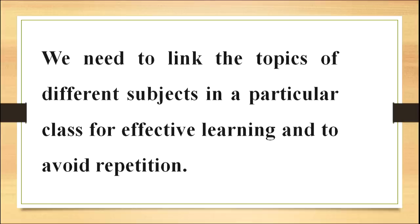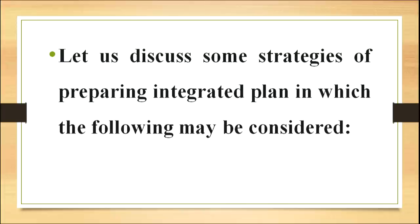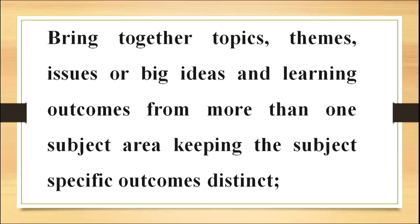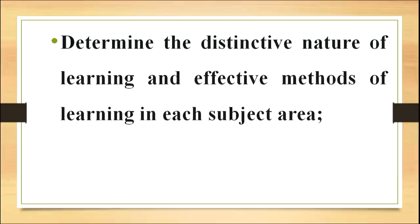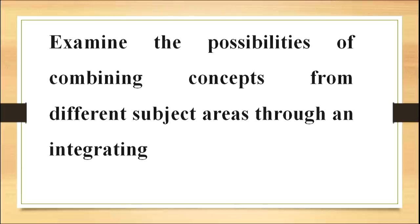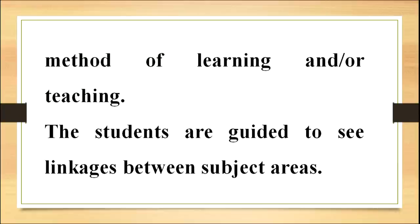We need to link the topics of different subjects in a particular class for effective learning and to avoid repetition. Some strategies for preparing an integrated plan include: bringing together topics, themes, issues or big ideas and learning outcomes for more than one subject area while keeping subject-specific outcomes distinct. Knowledge and skills are learned through individual subject areas but at times connect to cross-curricular topics, themes, issues or big ideas. Determine the distinctive nature and effective methods of learning in each subject area.